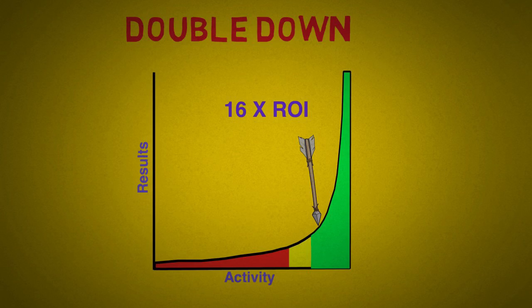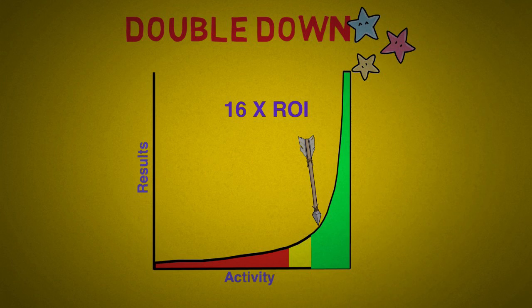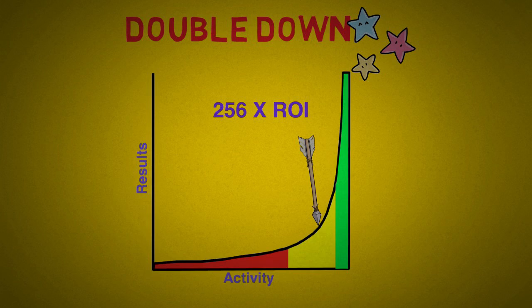The third D is to double down. Now this is where the magic is that only a handful of people are aware of. Doing this will give you a whopping 256x ROI. Instead of focusing on only the 20% that produces high results, try to focus on only the 4% that produces enormous results.